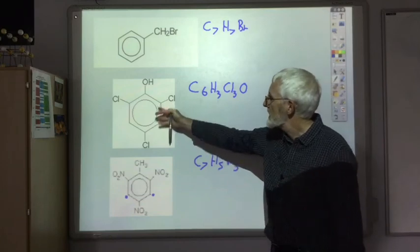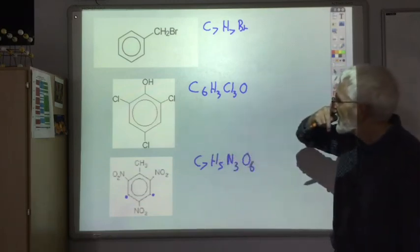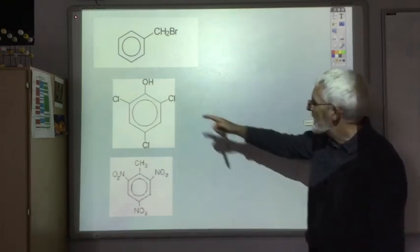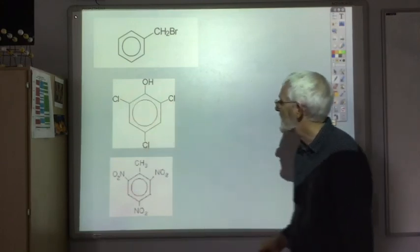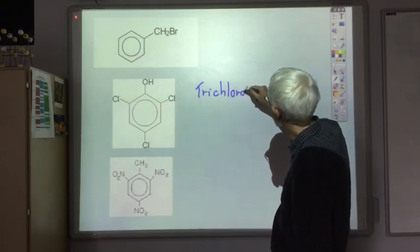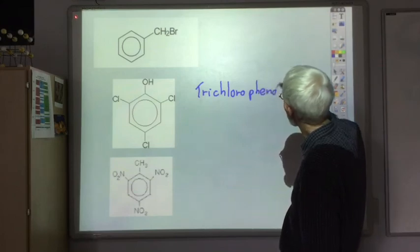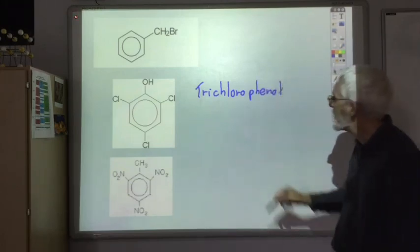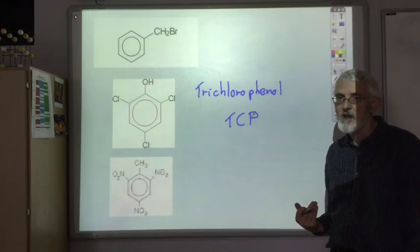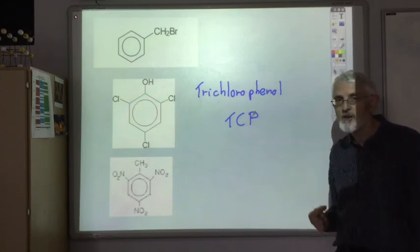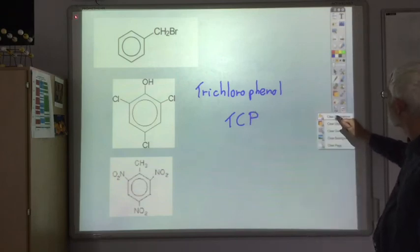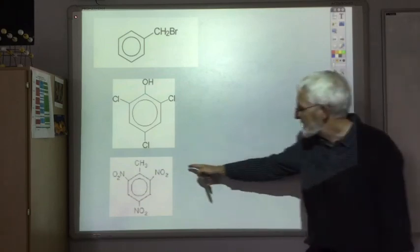Just out of interest, this is quite a famous compound. The benzene ring with the OH group is phenol. Here we've got three chlorines attached. So the name of this compound is trichlorophenol, which some of you may know as TCP, that antiseptic. When I was young, when you had a sore throat, you used to gargle in TCP.